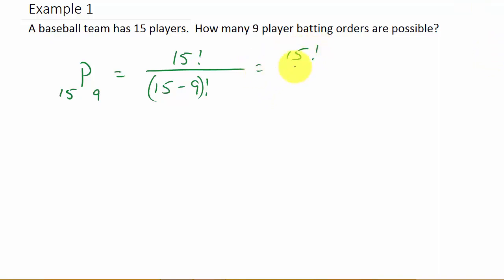Now if you plug this into the formula, you're going to get 15 factorial over 15 minus 9 factorial. So that would be 15 factorial over 6 factorial. You could punch that in your calculator, reduce it by hand or whatever, but I wouldn't plug it into the formula, just punch that into your calculator.